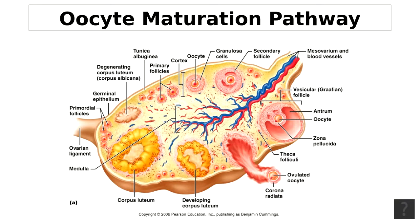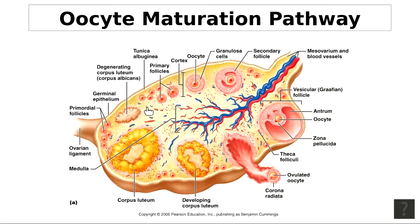The area of the ovary is called the stroma — S-T-R-O-M-A — which has an outer cortex and an inner medulla. This whole area of the ovary contains the ovarian follicles, the primary follicles. There are 300 to 400,000 of these follicles in the female's ovaries.